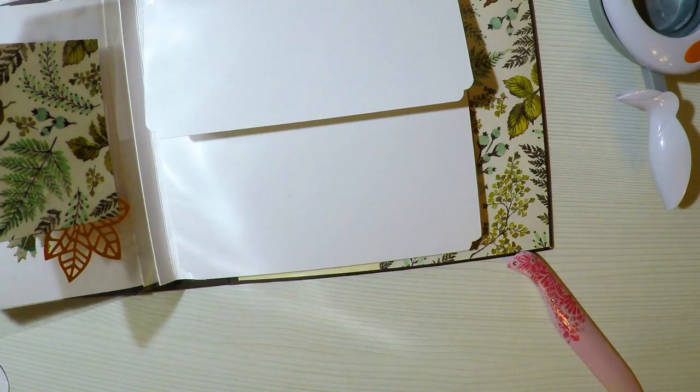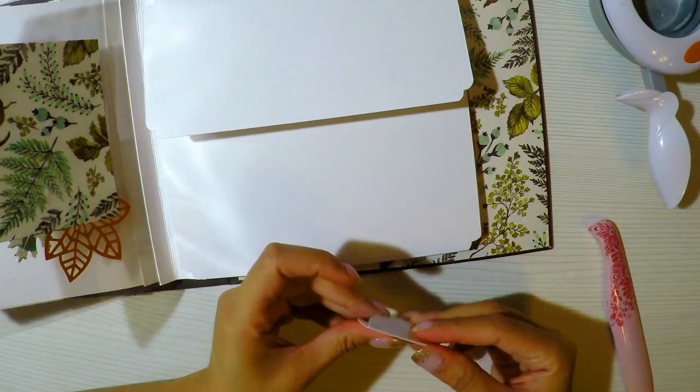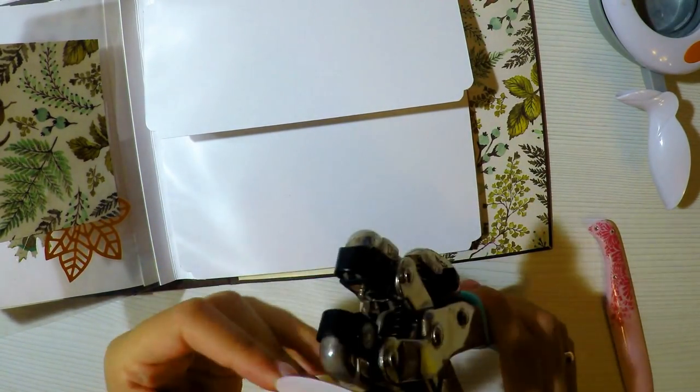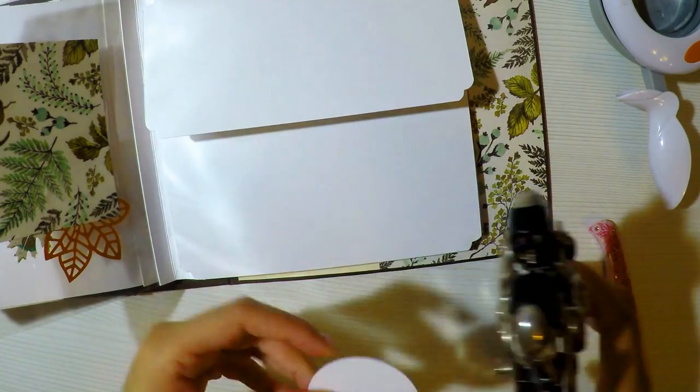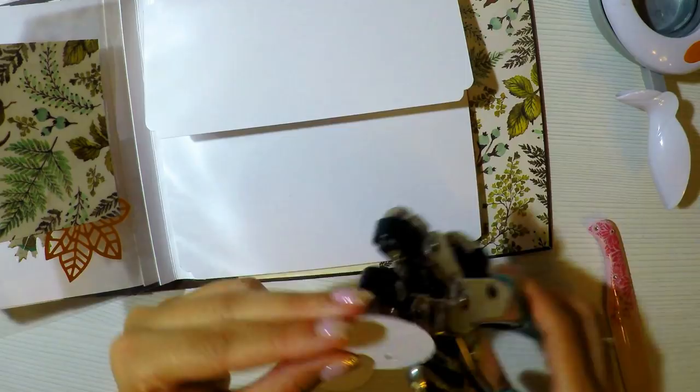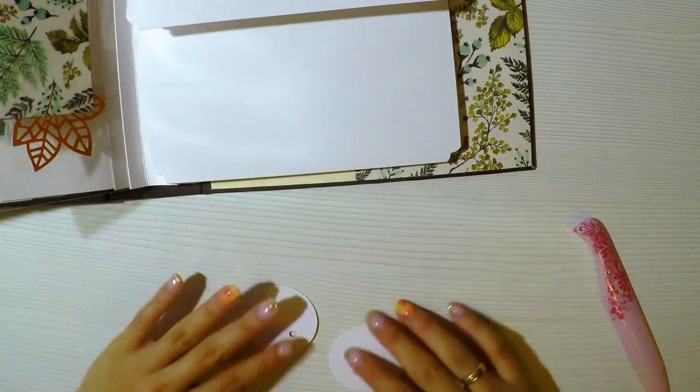Corto dos circulitos. Y estos dos circulitos lo que haré será abrir un pequeño agujerito en uno de los lados. Y luego lo voy a marcar a la mitad para doblar este círculo. Doblo el círculo a la mitad. Lo pliego primero para que me quede el doblez perfecto y abro dos circulitos con la crop-a-dile.